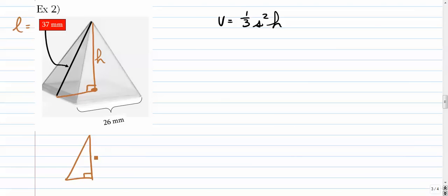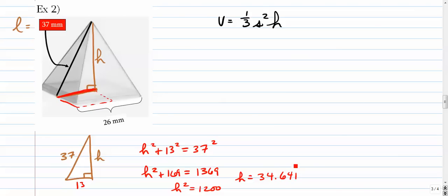So the slant height is given to us. And what we need to do is draw a little diagram off to the side where we have h and 37. And this distance down here is not 26, but half of that, it would be half of 26, so that's 13. So in our Pythagorean theorem, it's h² + 13² = 37². So we simply solve that. And let's see, 37 squared is 1369, and we're going to subtract, we get h² equals 1200, and take the square root of that, and you get h is equal to 34.641 millimeters.